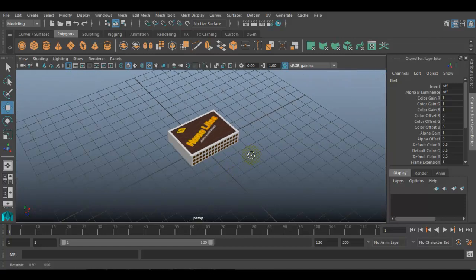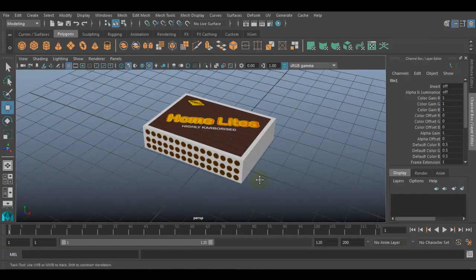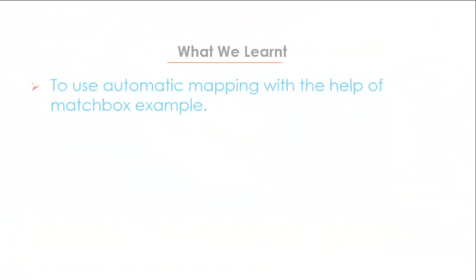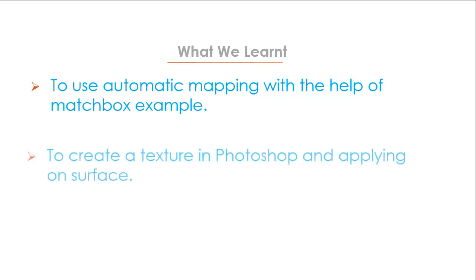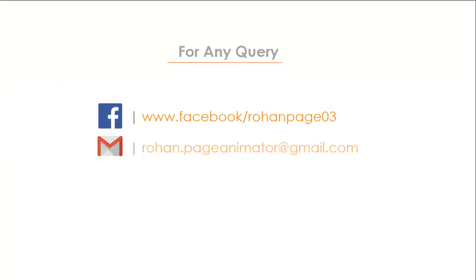We saved the texture in JPEG and applied it on this matchbox. This is how you can create a texture for a matchbox. In this video we have seen how to use automatic mapping with the help of the matchbox example, where we created a texture in Photoshop and then applied it on the surface. For any further queries, you can follow me on Facebook or write me an email at rohan.pageanimator@gmail.com. Thank you.